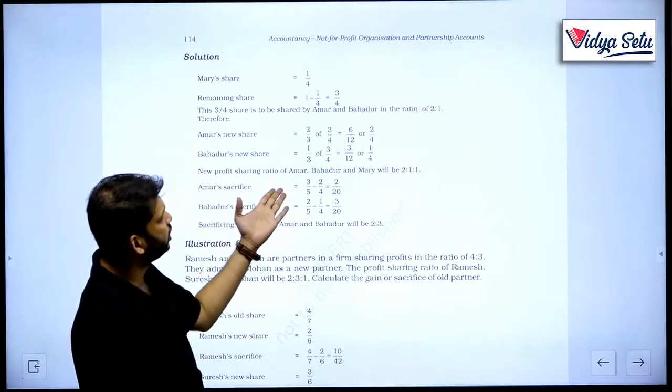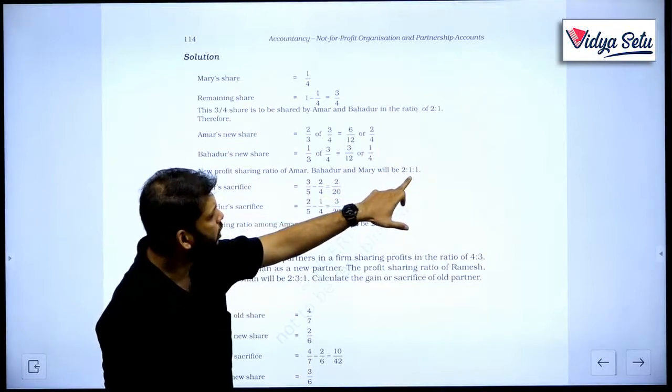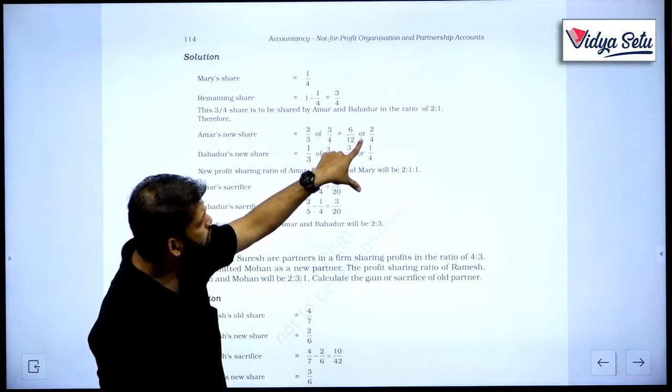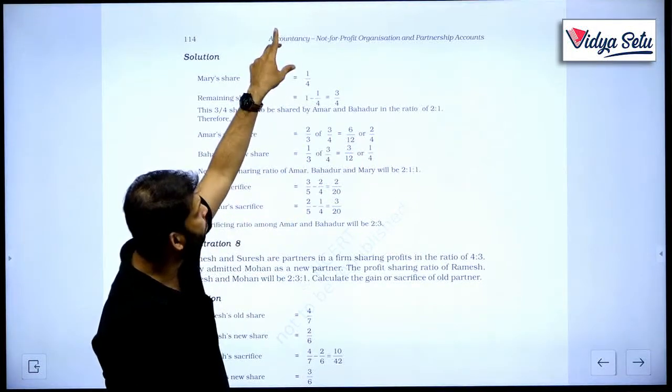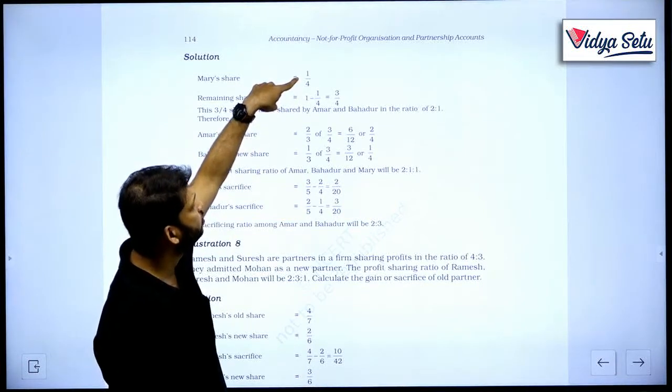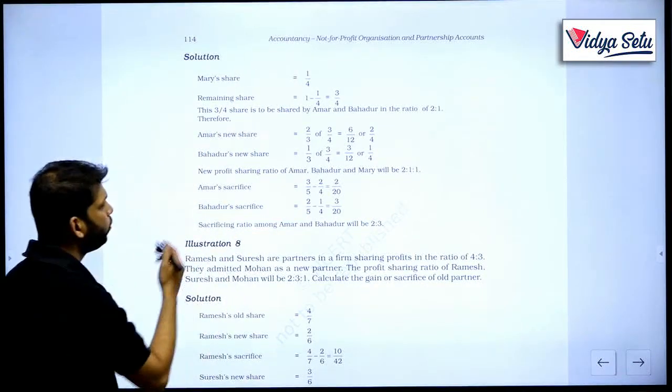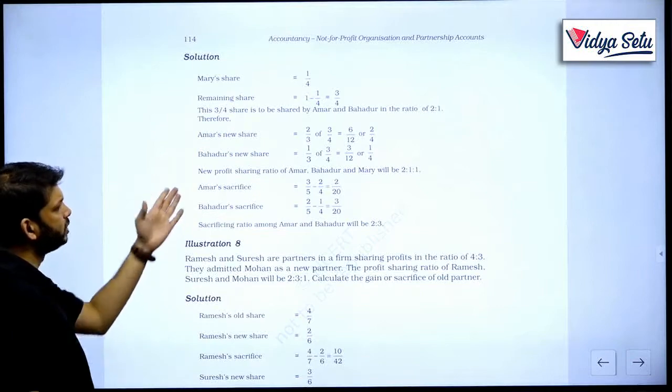So the new profit sharing ratio becomes 2 is to 1 is to 1. How? 2 is to 1 and 1 upon 4, we already know this one. 2 is to 1 is to 1. New profit sharing ratio.